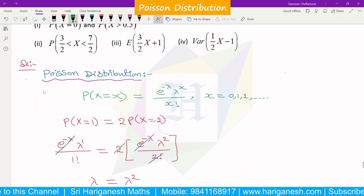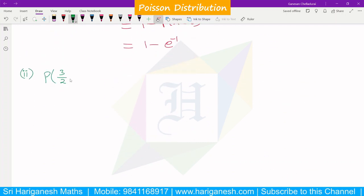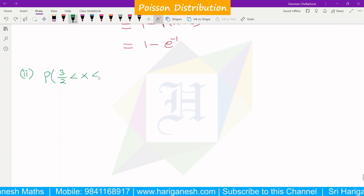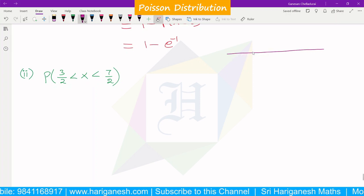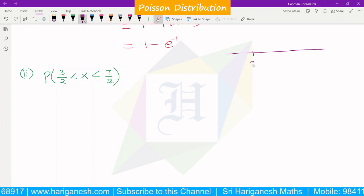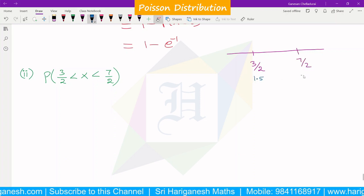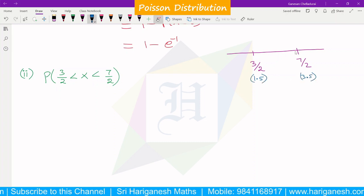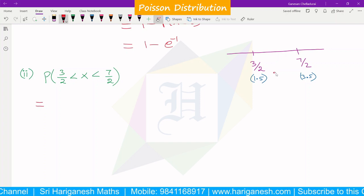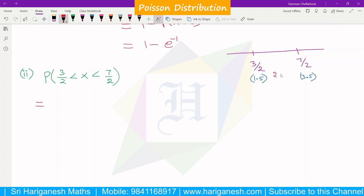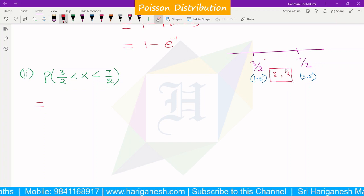The third question is P(3/2 < X < 7/2). This is also a non-integer value. 3/2 is 1.5 and 7/2 is 3.5. If we convert to integer values, the integers between 1.5 and 3.5 are 2 and 3. So we need P(X = 2) + P(X = 3).